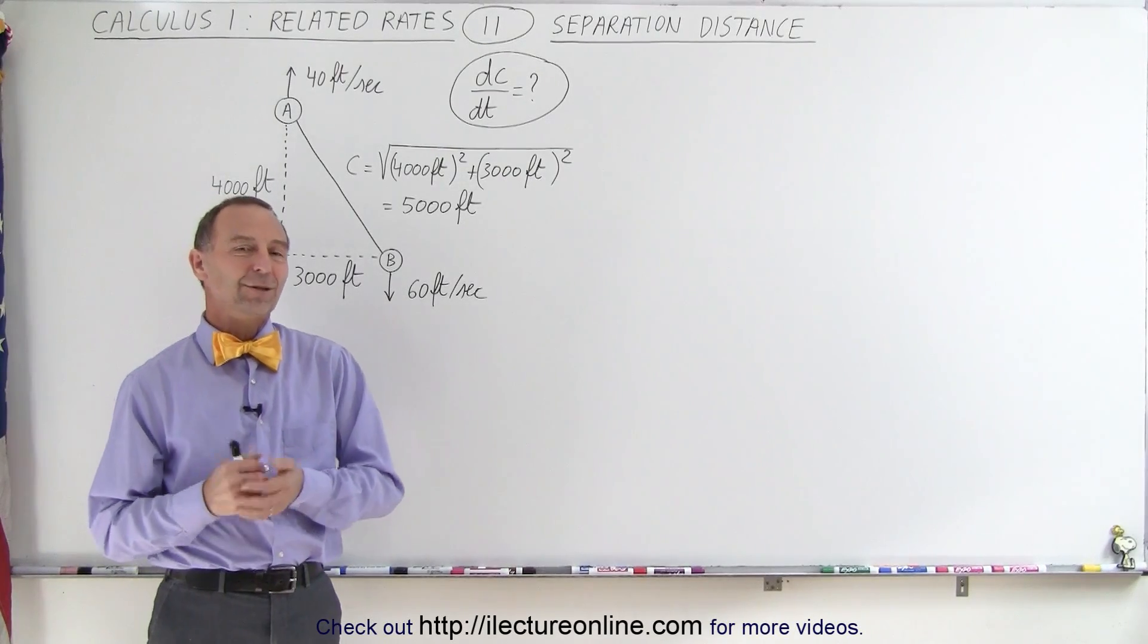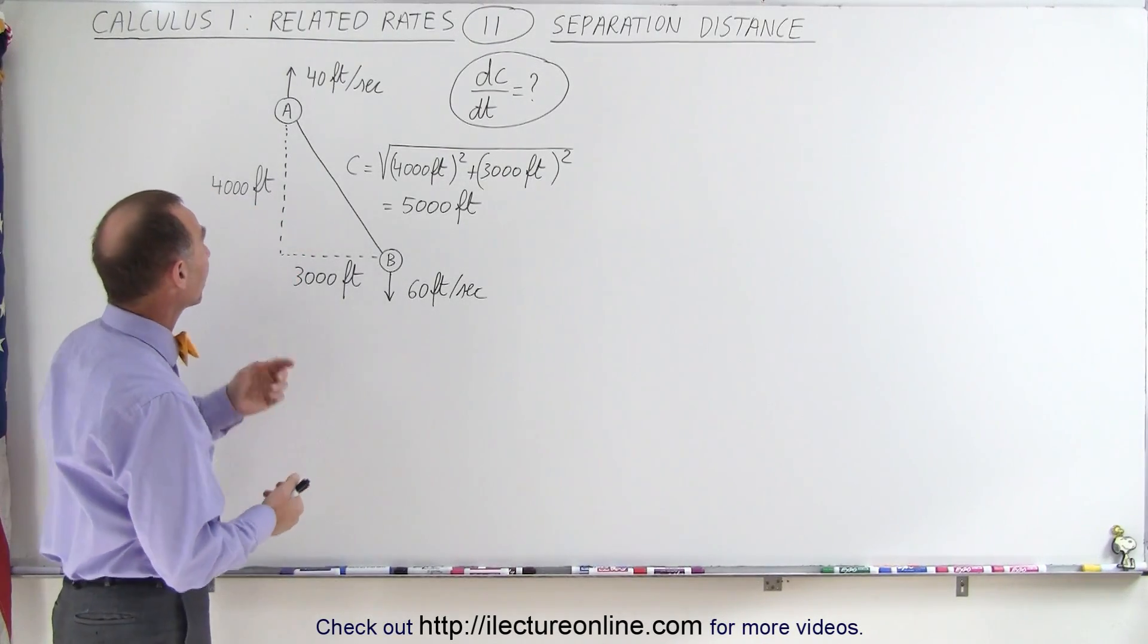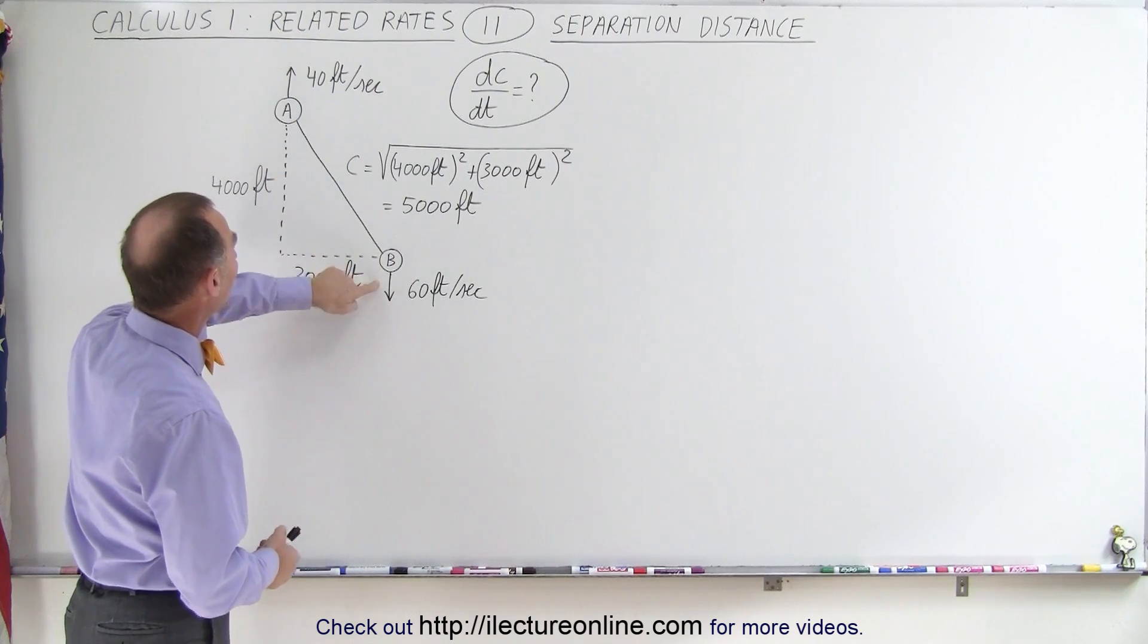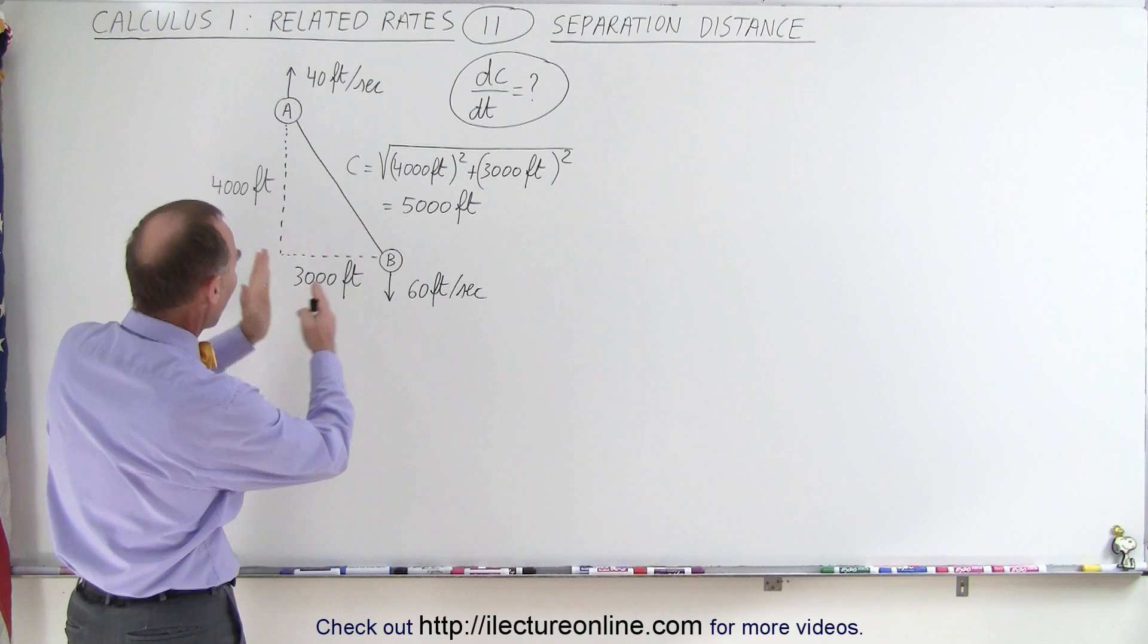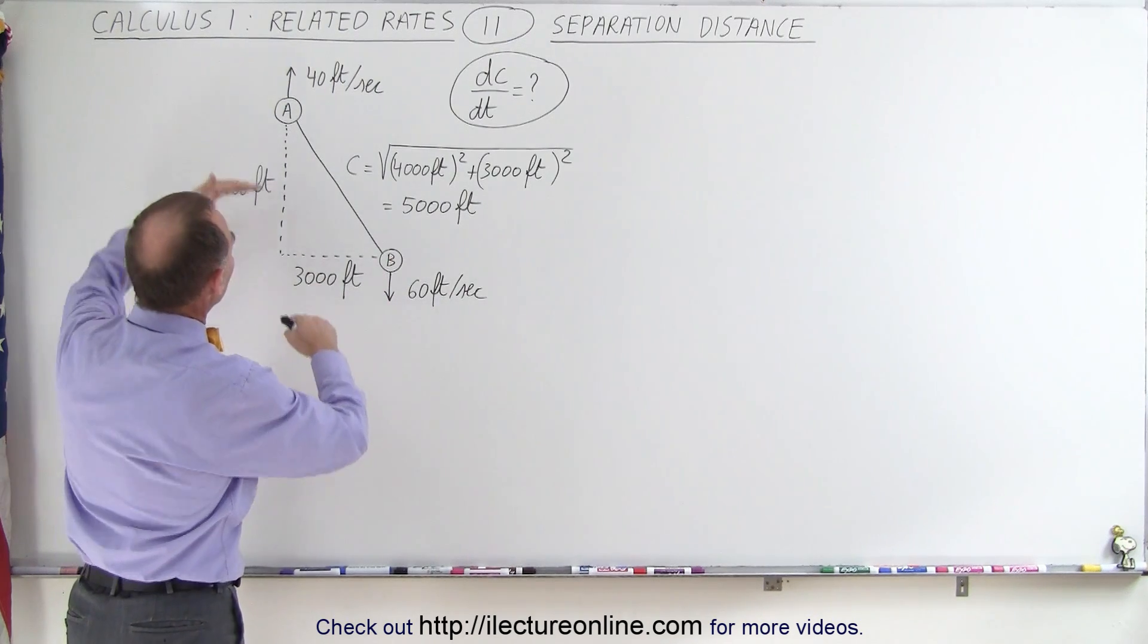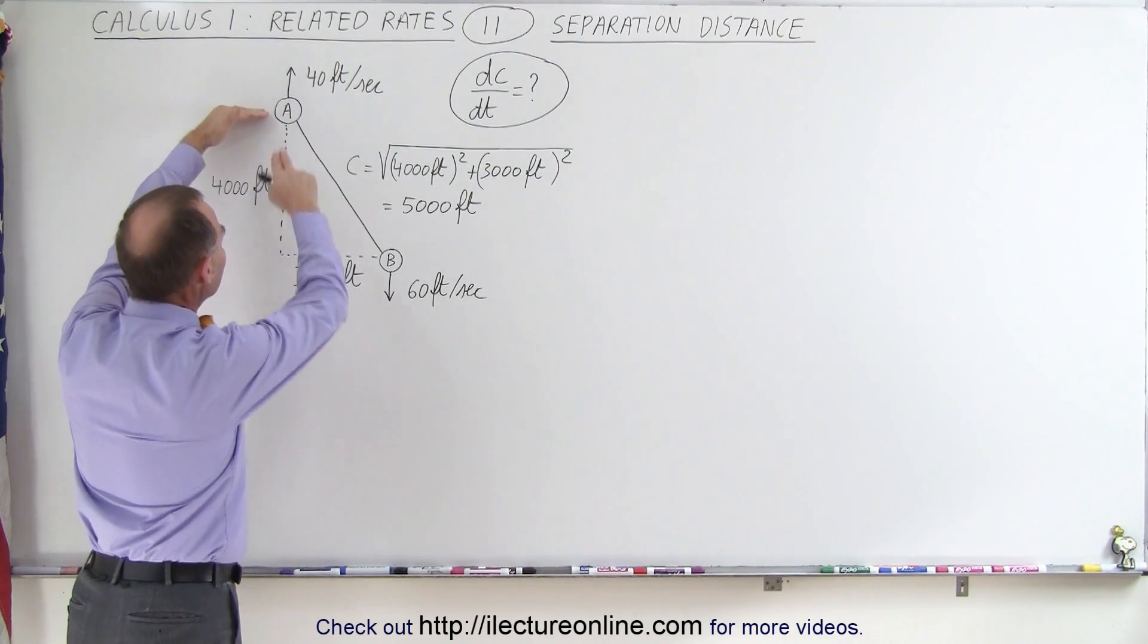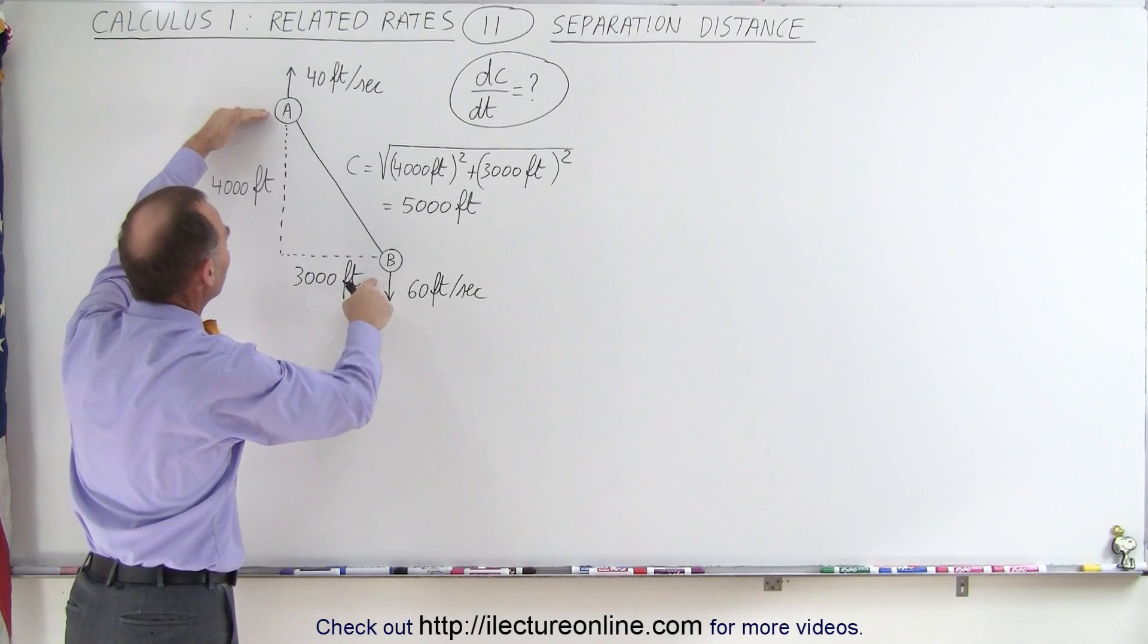Welcome to my lecture online. Here in our next problem, we have two cars, let's label them A and B, who are driving away from each other, but not directly away from each other. They're offset by 3,000 feet. They're currently 4,000 feet in the north-south direction away from each other.